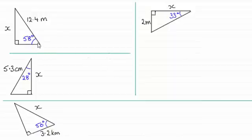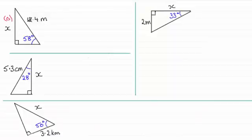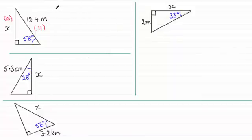What we need to do in any of these triangles is label the sides — just two of the sides is sufficient. Label the side you want to find. In this triangle, side X is opposite the angle, so I'll label that O for opposite. The side we're given is the hypotenuse — the side opposite the right angle — so I'll label that H. We need the trigonometric ratio that connects opposite and hypotenuse, which is the sine ratio.